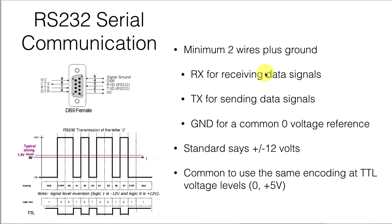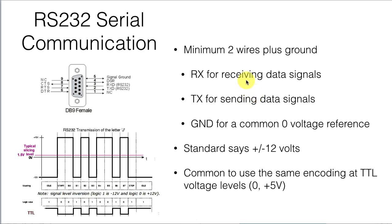Speaking of old data transmission protocols, RS-232 serial communication has been around for a long time. It requires a minimum of two wires plus ground, and the original standard specified a 12-volt signal. It's much more common now to use the same encoding at TTL voltage levels — just zero and plus 5 volts — though the original standard required actual plus and minus 12 volts. It wasn't particularly fast, but it was plenty fast enough for teletype writers and things like that.